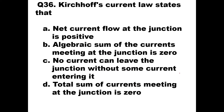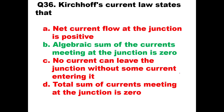Question number 36: Kirchhoff's current law states that — the options include: net current flow at the junction is positive; algebraic sum of the currents meeting at the junction is zero; no current can leave the junction without some current entering it; or total sum of currents at the junction is zero. The algebraic sum of currents entering equals the algebraic sum leaving, so option B is the right answer.